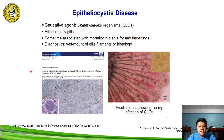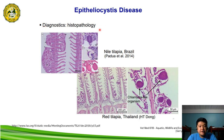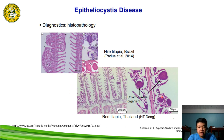Epitheliocystis disease was also reported in Nile tilapia in Brazil. Diagnostics include histopathology — a histopathologic tissue section of Nile tilapia in Brazil as reported by Padua in 2014, and a tissue section from red tilapia in Thailand as reported by H.T. Dong, showing chlamydia-like organisms in the tissue section.